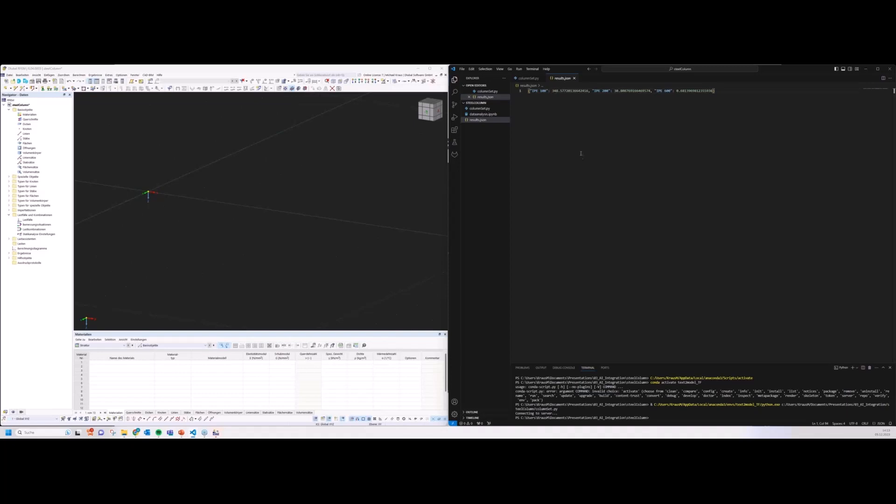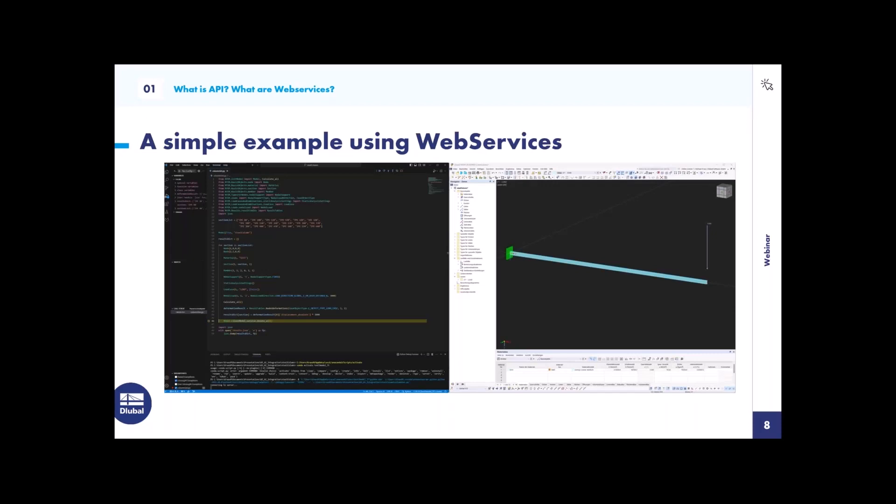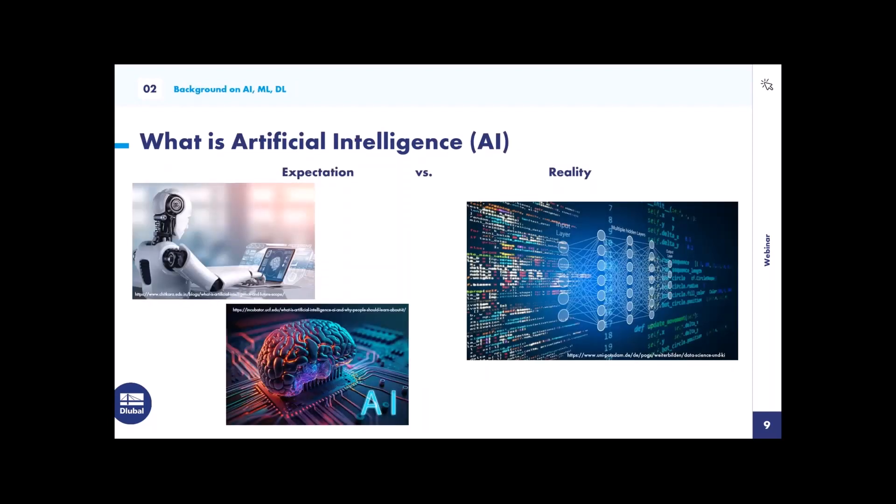I hope the workflow here got clear. If you have more interest in learning about the web services and how to use the API, feel free to check our other webinars or put some questions into the chat box. As you can imagine, we have now a big source of data, or we can generate a lot of data. The next step would be, can we use somehow AI in the widest sense for that?